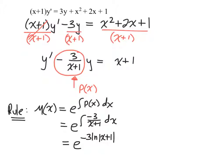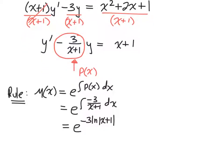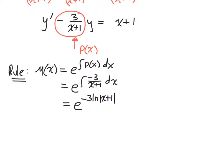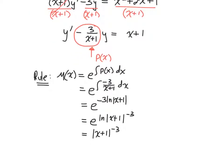We leave off the plus c until the end. So cleaning it up, show the intermediate step e to the ln x plus one to the negative third, which in turn becomes just x plus one to the negative third. So that's what's going to get multiplied through.